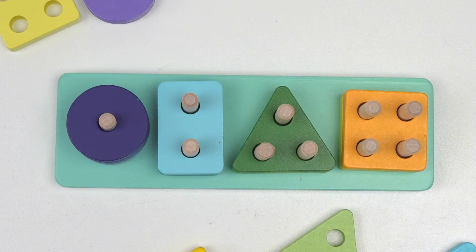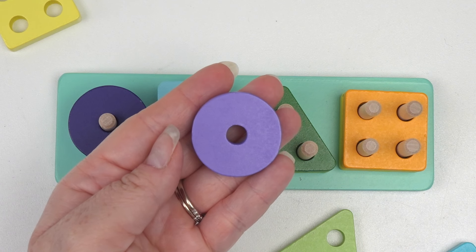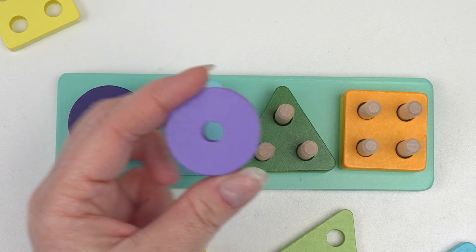And how many holes did the circle have? One! Our circle has one hole right in the middle.